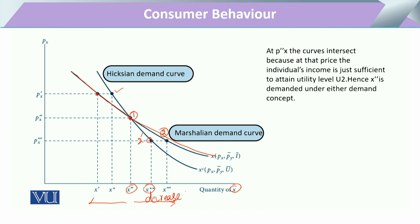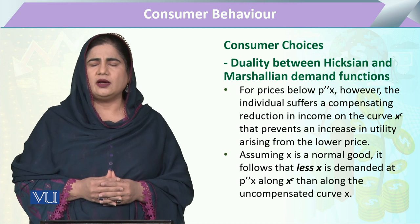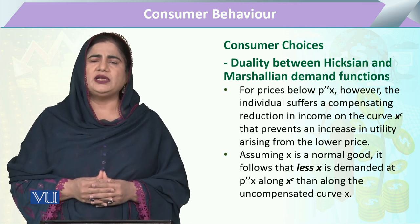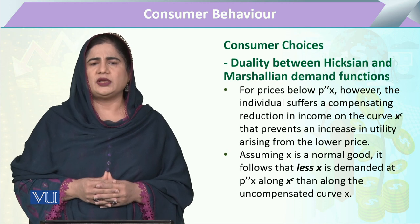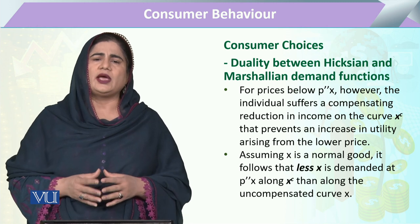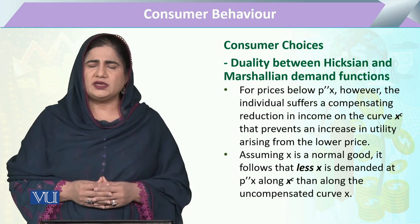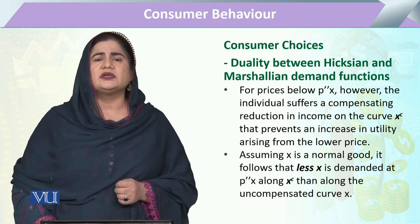Now, coming to the point of whether all desired points can be achieved if the consumer is on either the Hicksian or the Marshallian demand curve — according to the duality theorem, we can conclude that whether the consumer is on the Hicksian or the Marshallian demand curve, there exists a situation where we can find intersection points of both and calculate the quantity demanded of X, whether using the compensated or the uncompensated demand curve.